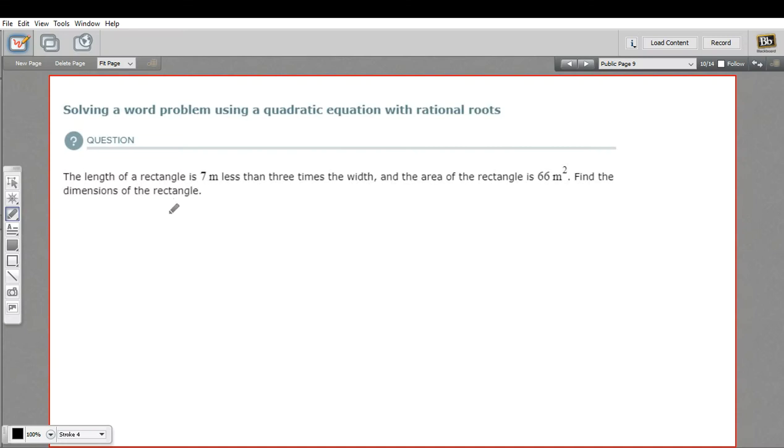Here we have a word problem that involves a quadratic equation, or so it tells us. Let's read the problem and see what we can do about trying to figure out the right equation here. It says the length of a rectangle is 7 meters less than 3 times the width. Okay, so one of these phrases that relates one thing to another, in this case length and width. That will probably come in handy a little later, but let's read the rest of the problem.